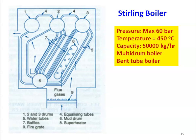Looking at the construction, we have a number of drums — one, two, three are the drums, and six is also a drum. One, two, three are the water drums, and the water drums are connected by a number of bent tubes. At the bottom, six is called the mud drum. A number of tubes are connected between the mud drum and the steam drums.